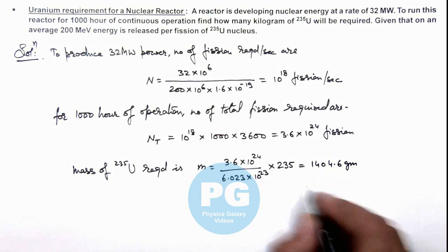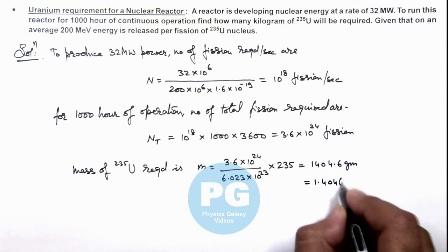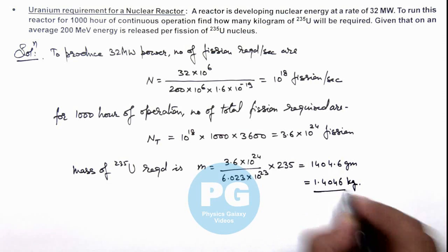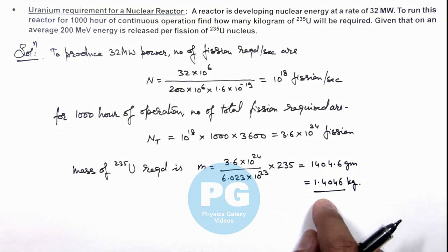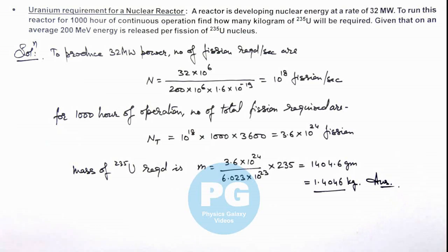So numerically, this equals 1.4046 kilograms. This much amount of uranium can sustain such a nuclear reactor for 1000 hours of operation. That is the final result of this problem.